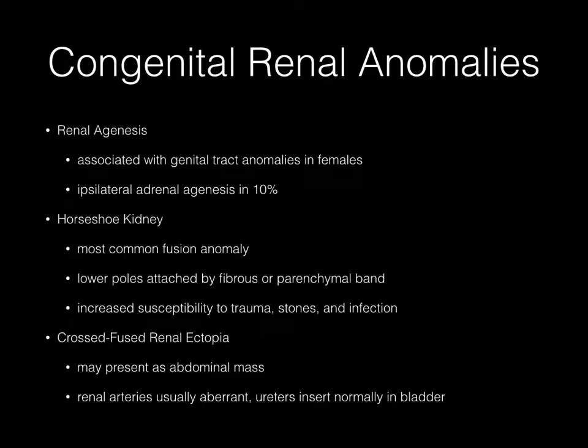Let's start with the kidneys. Regarding congenital renal anomalies, the first is renal agenesis. The important association here is genital tract anomalies in females. You can also see ipsilateral adrenal agenesis in 10% of these patients.